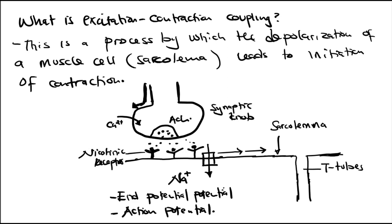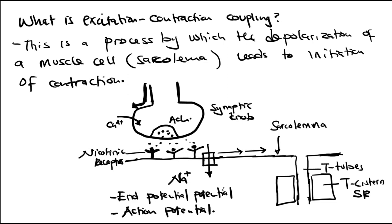The T-tubules are in close proximity with the terminal cisterns of the sarcoplasmic reticulum. On each side of the T-tubule you have terminal cisterns of the sarcoplasmic reticulum, which is specialized in calcium storage. The anatomy of one T-tubule with two terminal cisterns on either side is called a triad.